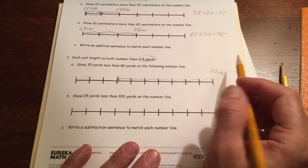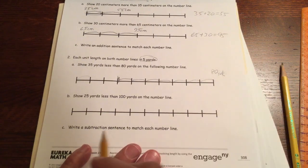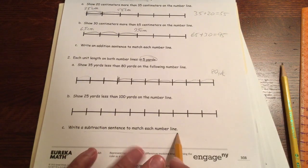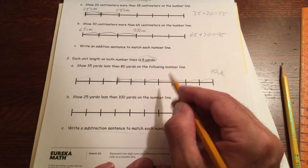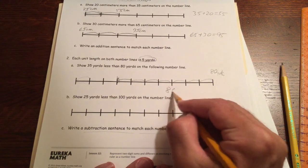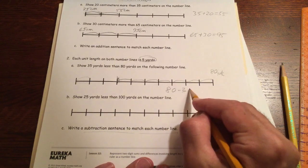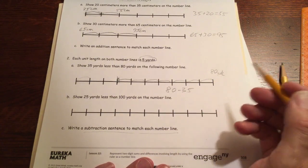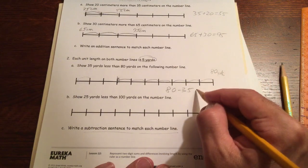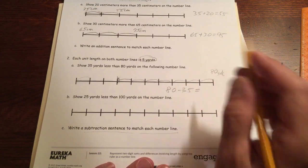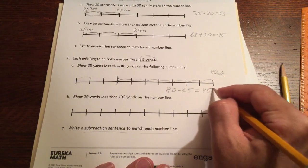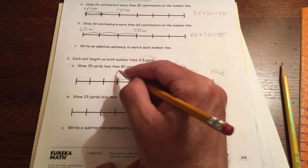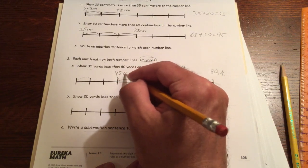But we could subtract it, and we're going to have to subtract it anyway. 80 minus 35. 80 minus 40 would be 40. That means we're taking 5 less, so we're going to have 5 more. So this is 45 yards.